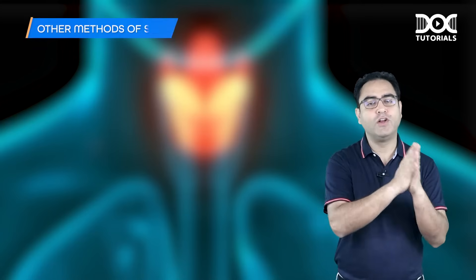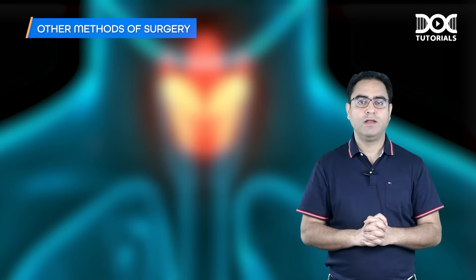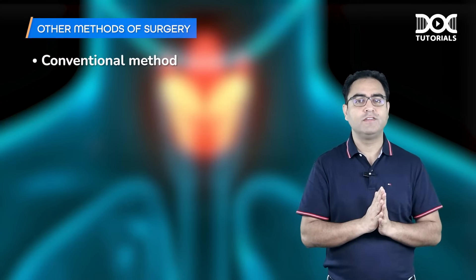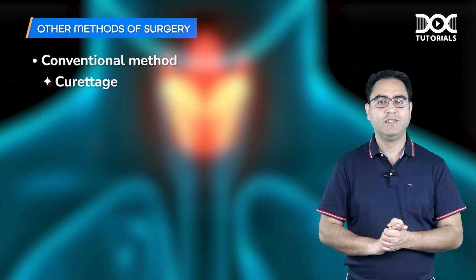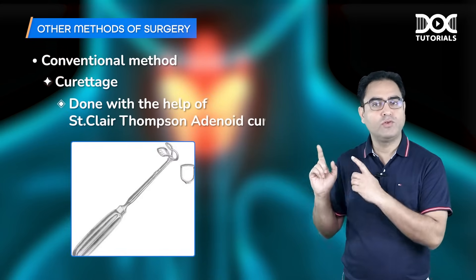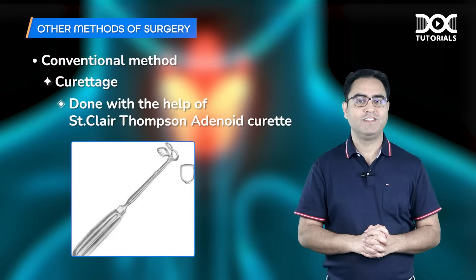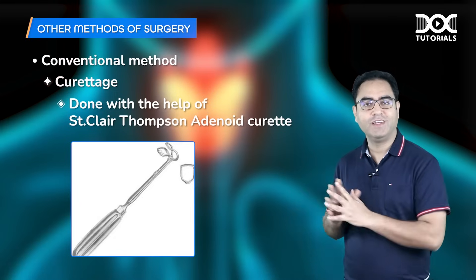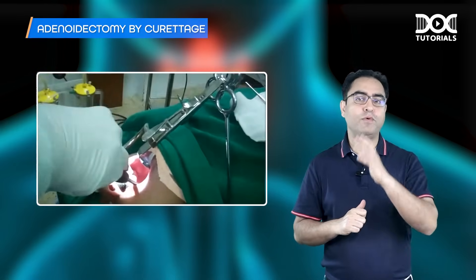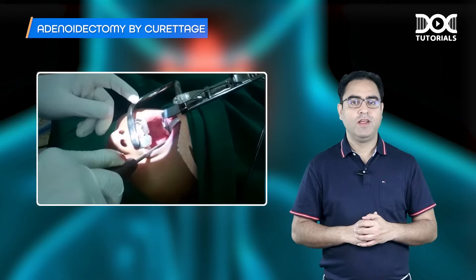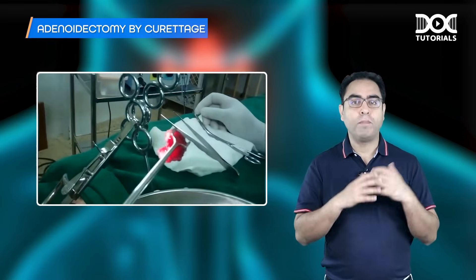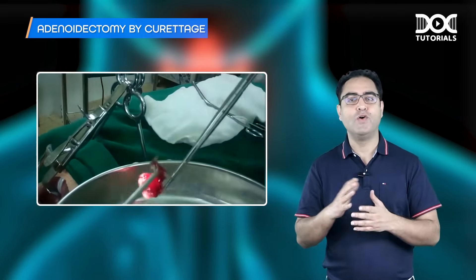The various methods of surgery for adenoid: number one is the conventional method — curettage — done with the Saint-Claire-Thompson adenoid curette. This is a blind procedure, so there is a high chance of complications and more bleeding.